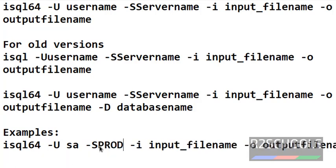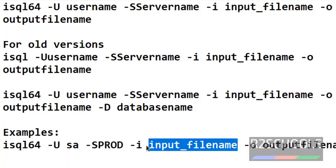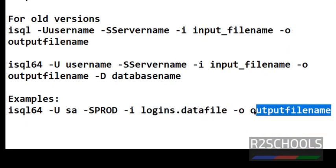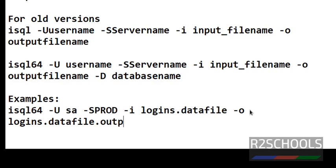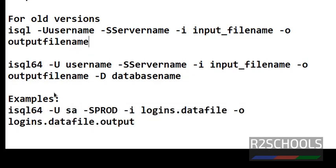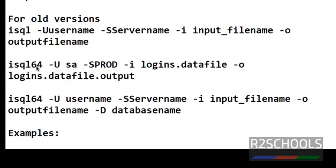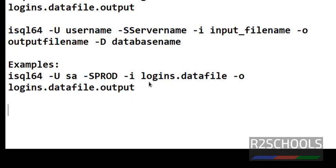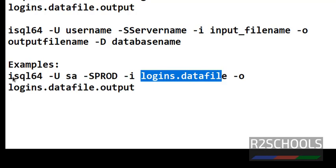Here my username is set, the server name is logody, and the input file name is logins. If you want to execute the same file in version 15.7 or lower versions, then copy this command and simply remove the '64' from isql64. I am going to execute this script in version 16.